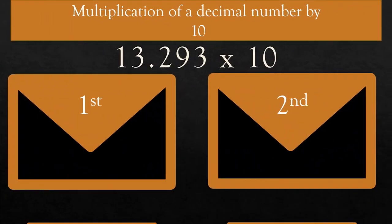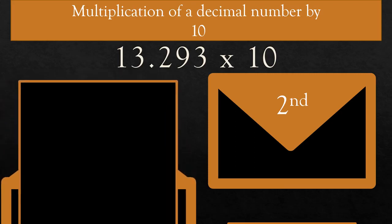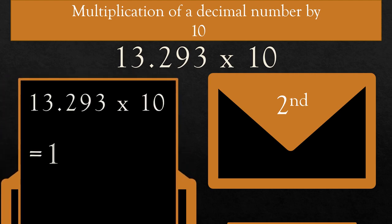For example, 13.293 × 10. There are two ways to solve this question; you can use any one of the methods. First way: if we multiply 13.293 × 10, the decimal point shifts one place to the right. So the answer is 132.93.